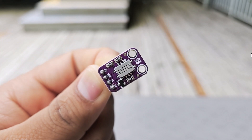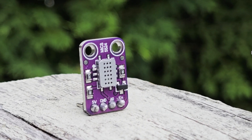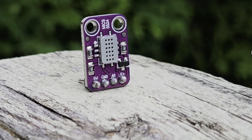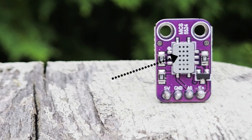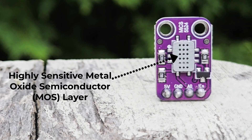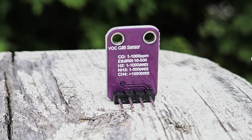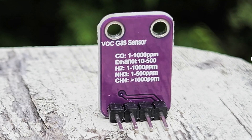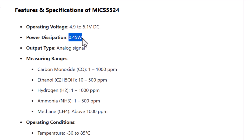Let's take a look at this sensor. This gas sensor module is an advanced sensing device engineered to detect a range of gaseous substances in various environments. At the core of this module is a highly sensitive metal oxide semiconductor layer that is specifically designed to respond to gases such as carbon monoxide, alcohol, acetone, formaldehyde, and hydrogen. It operates between 4.9 to 5.1 volt DC with a power of 0.45 watt.